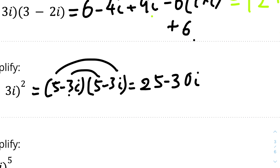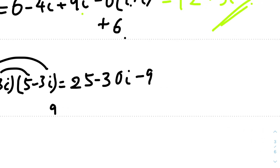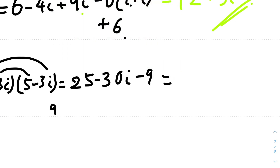The last term is minus 3i times minus 3i. Minus 3 times minus 3 is 9, but i times i is minus 1, so you apply the minus to the 9 to get negative 9 — essentially 9 times minus 1. So it will be minus 9. Therefore we get 25 minus 30i minus 9, and the real part is 25 minus 9, which is 16. The answer is 16 − 30i.